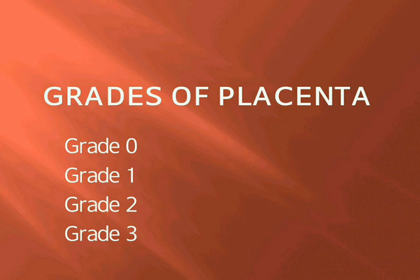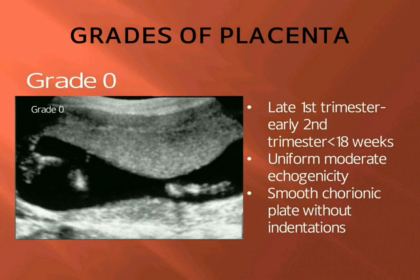There are grade 0, grade 1, grade 2, and grade 3. Grade 0 appears late in the first trimester and early second trimester, below 18 weeks. It is uniform moderate echogenicity and a smooth chorionic plate without indentations.